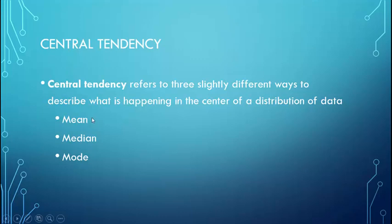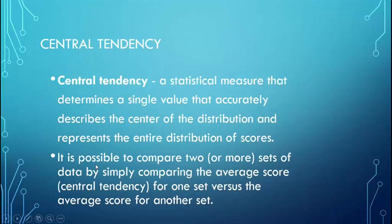The three measures of Central Tendency are Mean, Median, and Mode. Central Tendency, any of those three, is a measure that determines a single value that describes what's happening at the center of a distribution of scores. It becomes one number that represents your entire distribution of scores. In that way, it's what we call a descriptive statistic — it describes, summarizes, and simplifies your data. No matter how many data points you have, whether you've tested 100 or 1,000 people, you would find one measure of Central Tendency to describe that average score.